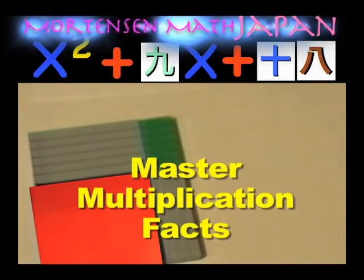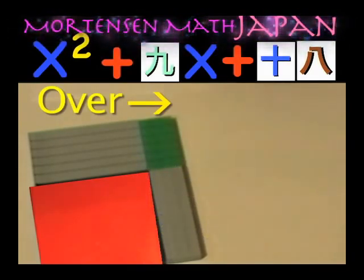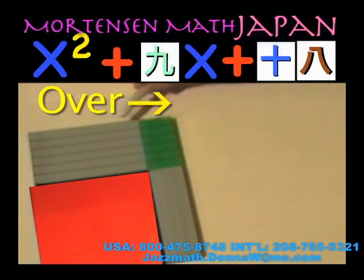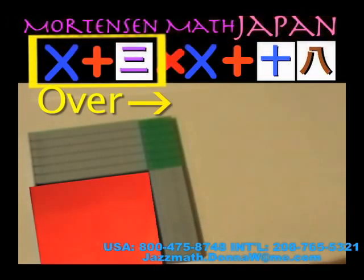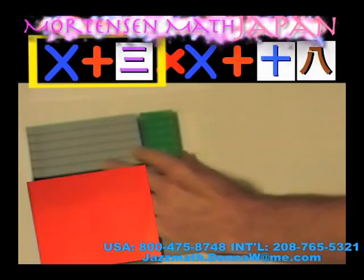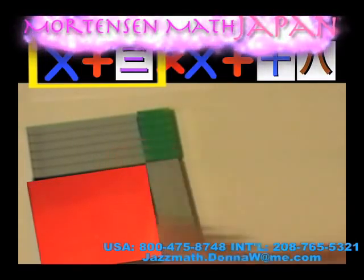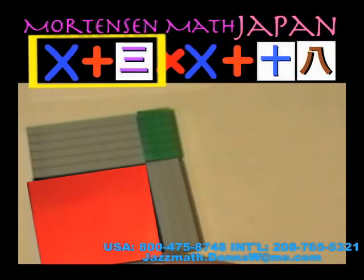Our factors are, if we will read the distance over, x plus 3. And let me point out, we should recognize that our factors can be read from any point reading the distance across. Here, our distance across is also x plus 3.